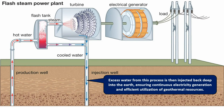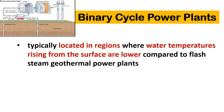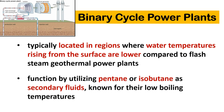Excess water from this process is then injected back deep into the earth, ensuring continuous electricity generation and efficient utilization of geothermal resources. Binary cycle power plants are typically located in regions where water temperatures rising from the surface are lower compared to flash steam geothermal power plants. They function by utilizing pentane or isobutane as secondary fluids, known for their low boiling temperatures.